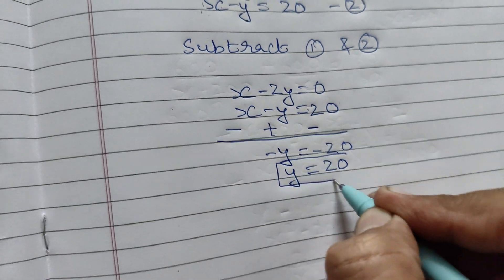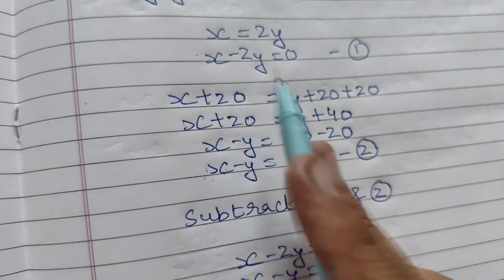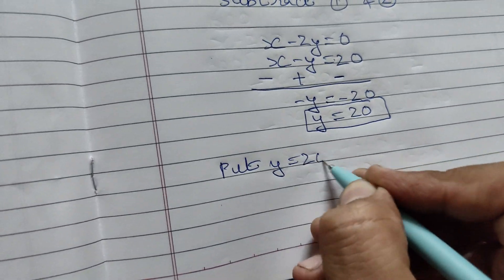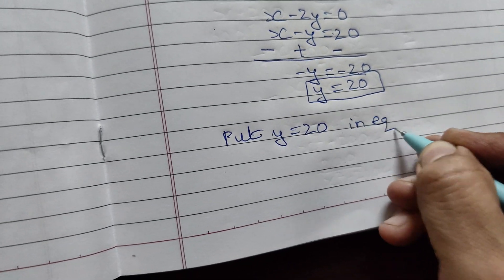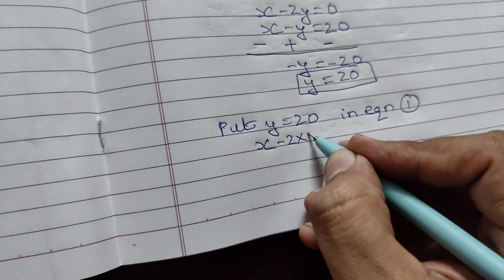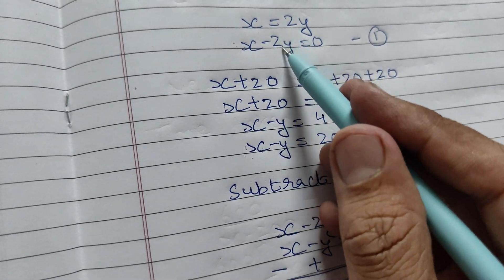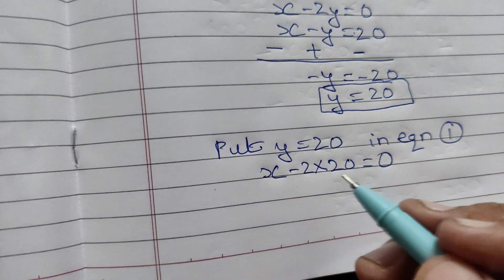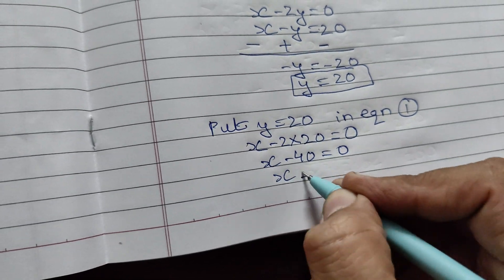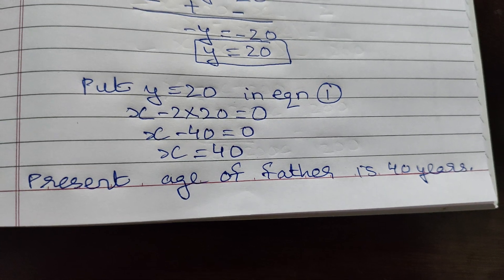We need to find the father's age, so let us substitute y = 20 into Equation 1. We get x minus 2 into 20 = 0, which gives x minus 40 = 0, so x = 40. Therefore, the present age of the father is 40 years.